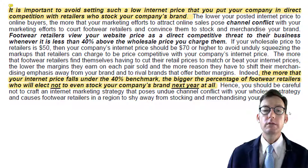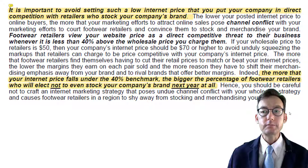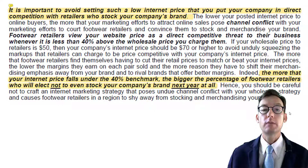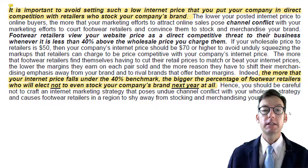Notice that the percentage is in bold. The Player's Guide gives this example: if your wholesale price to retailers is $50, then your internet price should be $70 or higher to avoid channel conflict. How do they get $70? 40% of $50 is $20, and $50 plus $20 is $70.